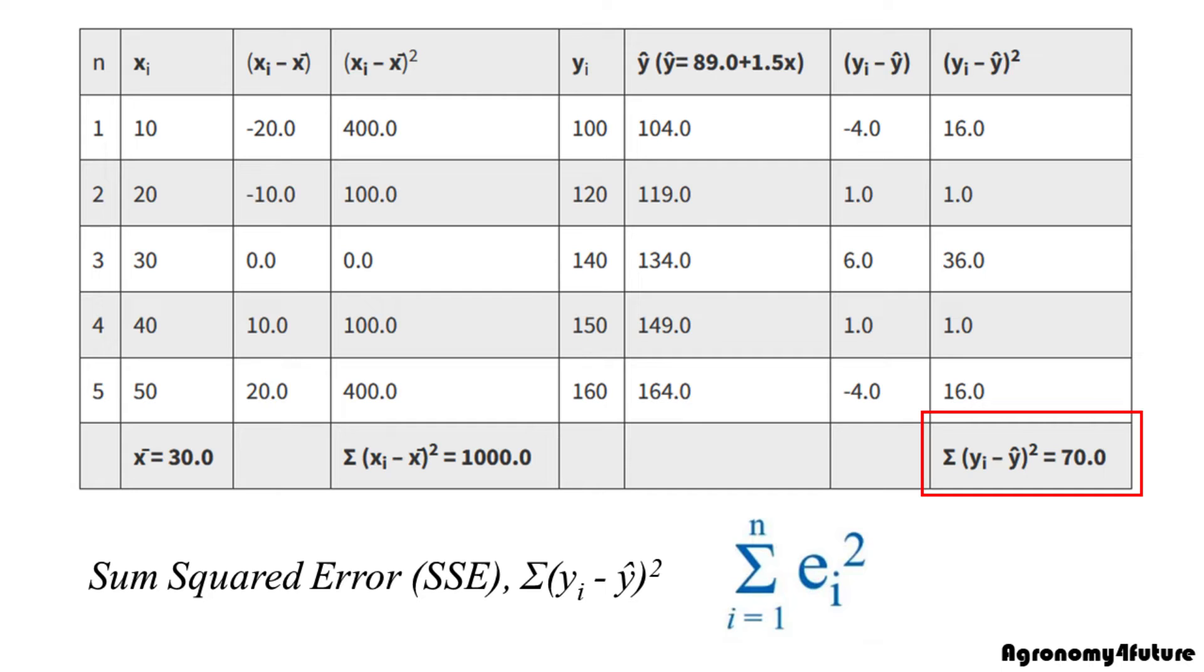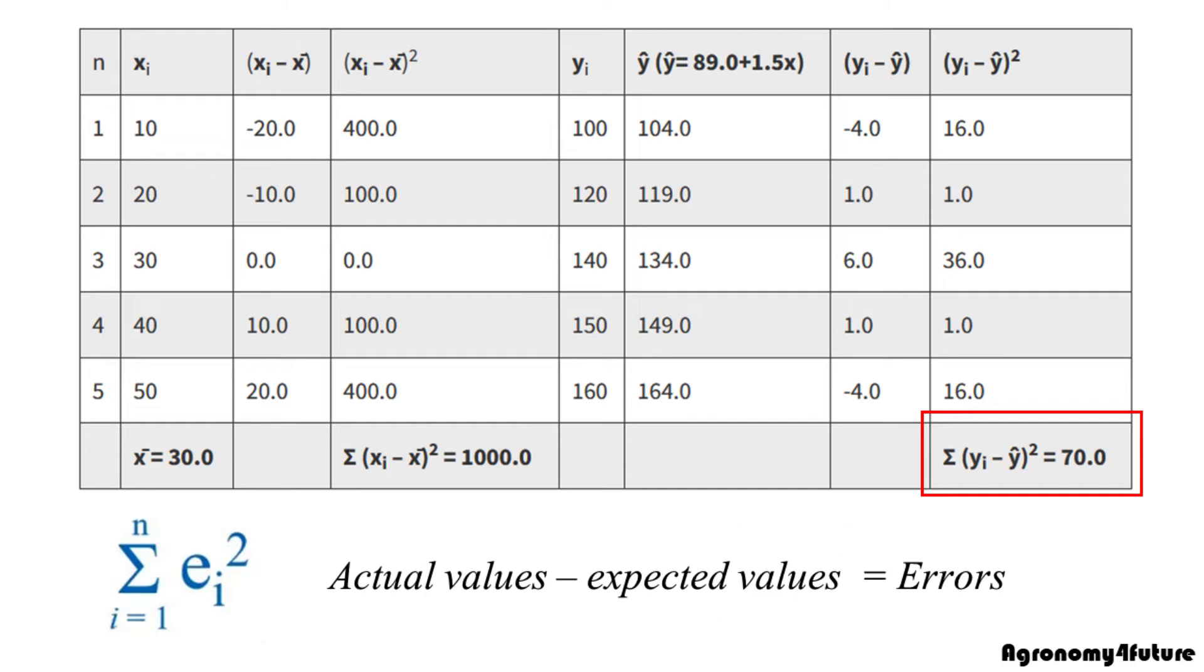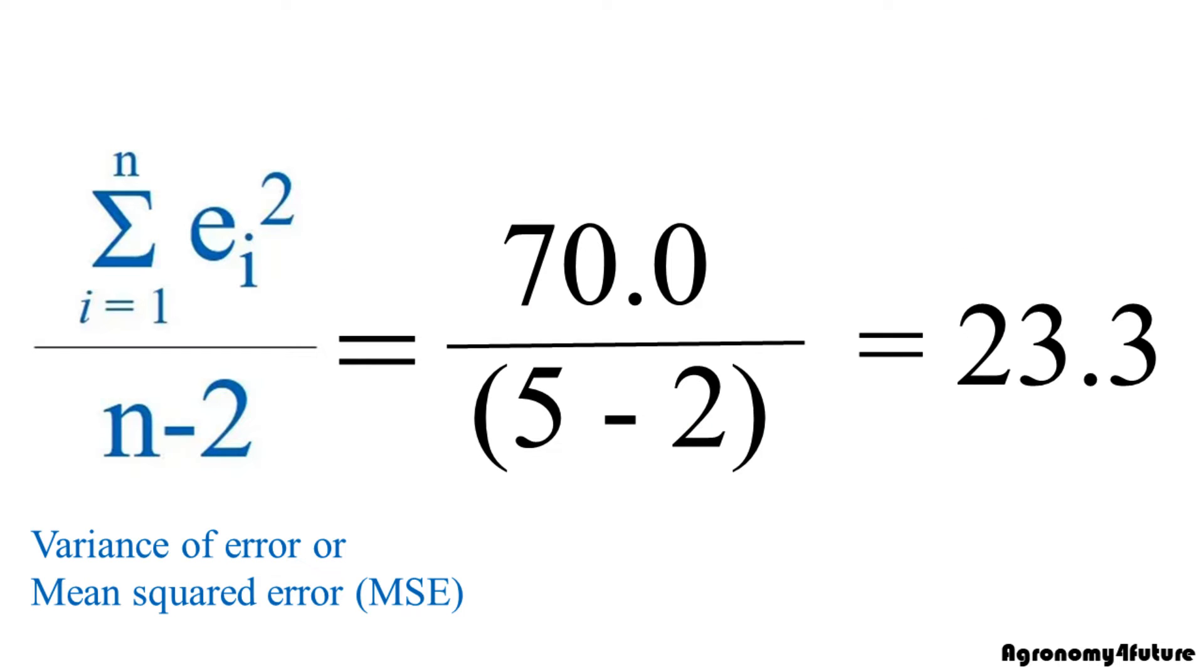Why is it sum of squared error? Think about that. We calculated y and the expected y. The difference between actual values and expected values would be errors. If we divide sum of squared error by degree of freedom, which is n minus 2, it will be variance of error.